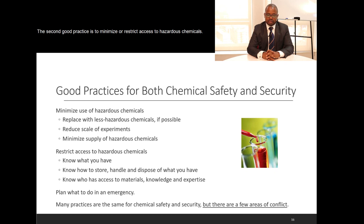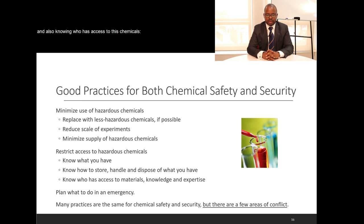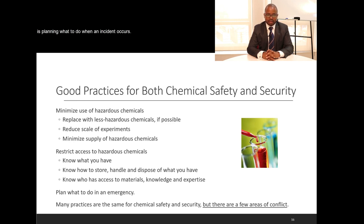The second good practice is to minimize or restrict access to hazardous chemicals: knowing the chemicals we have, knowing how we store, handle, and dispose of them, knowing who has access, and what kind of knowledge and expertise those individuals possess. The third good practice for both chemical safety and security is planning what to do when an incident occurs.